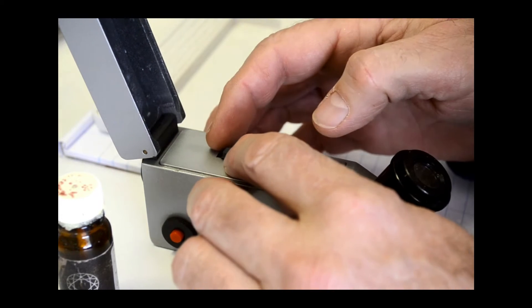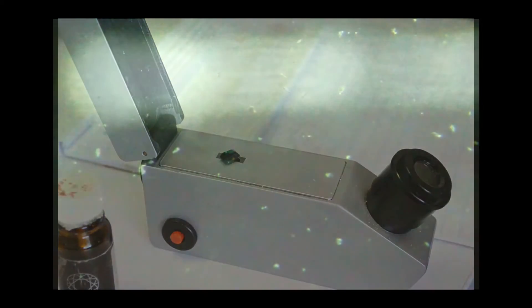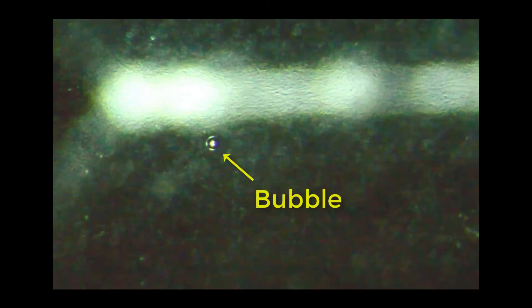As I turn the polaroid I still get one reading, which suggests that the stone is singly refractive. Under the microscope we can see some bubbles along a flat plane as we focus into the stone, which suggests a composite stone.